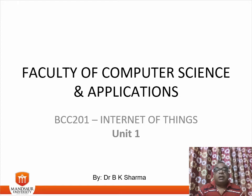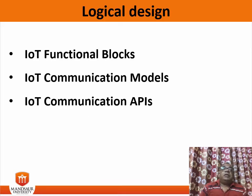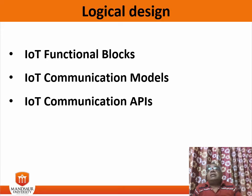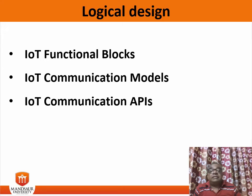Welcome students. Today's topic is logical design of IoT. Logical design of IoT — Internet of Things — refers to an abstract representation of entities and processes without going into the low-level specifics of the implementation. For understanding the logical design, we have three headings: IoT functional blocks, IoT communication models, and IoT communication APIs.